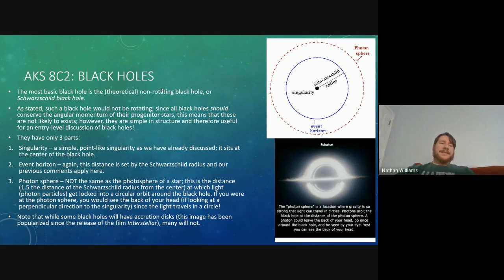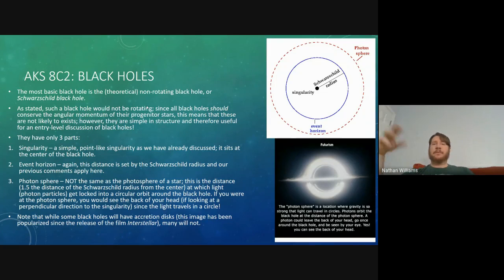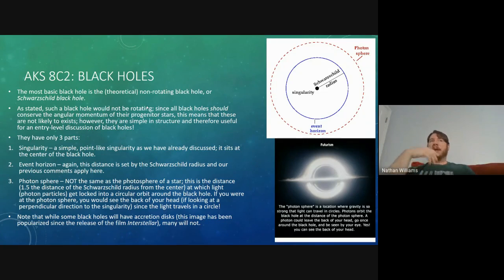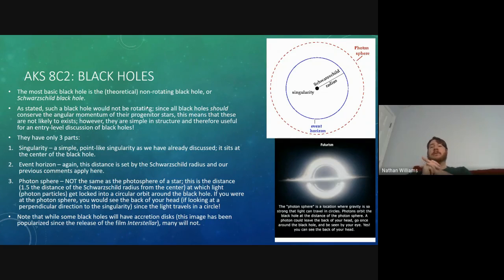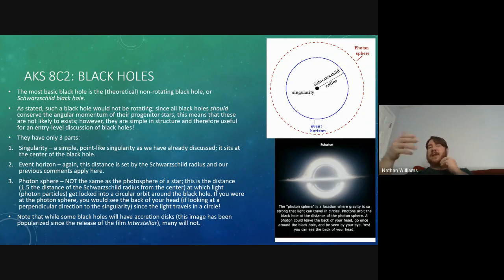A Schwarzschild black hole would not be rotating. Since all black holes should conserve the angular momentum of their progenitor stars, if the black hole started as a red supergiant that was spinning as it went into a Type 2 supernova explosion, the resulting black hole should also conserve that angular momentum and actually rotate faster, because its radius has decreased tremendously. So these non-rotating Schwarzschild black holes probably don't exist in nature.